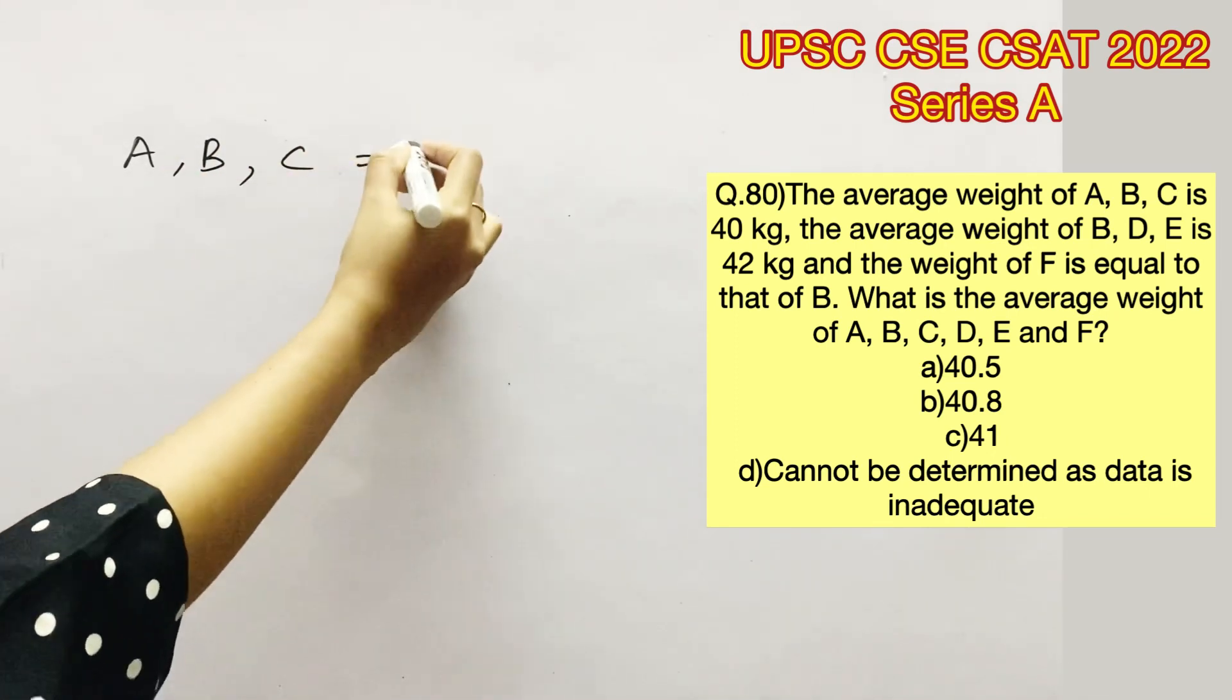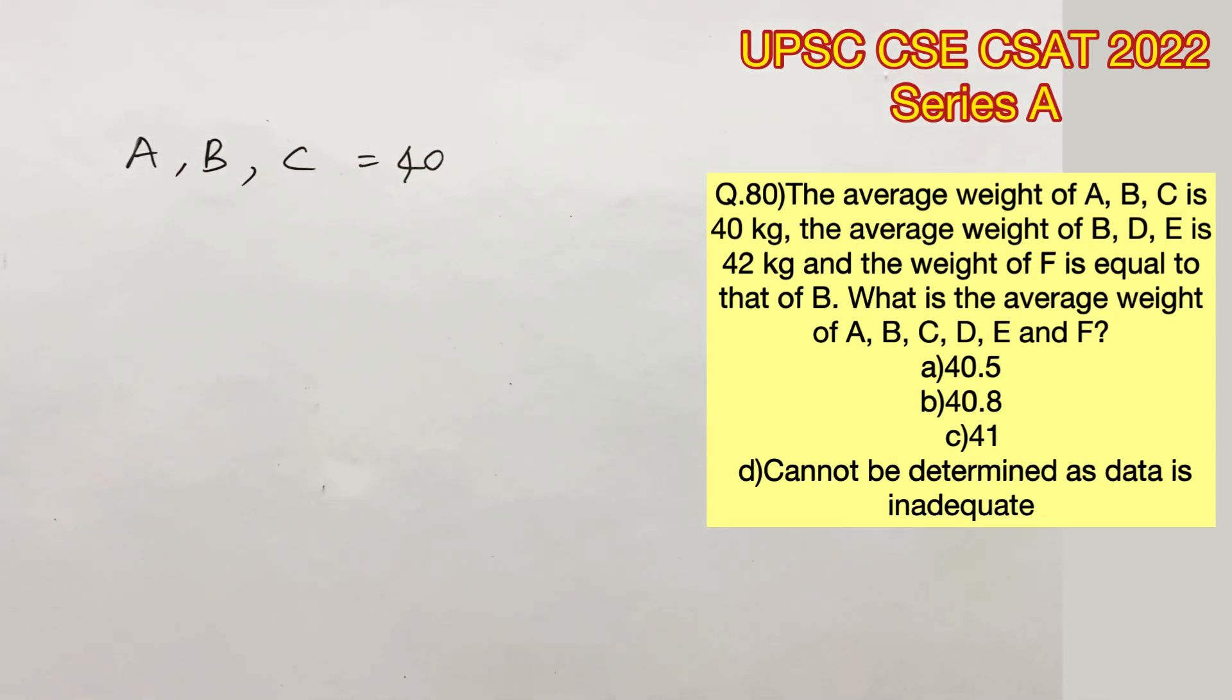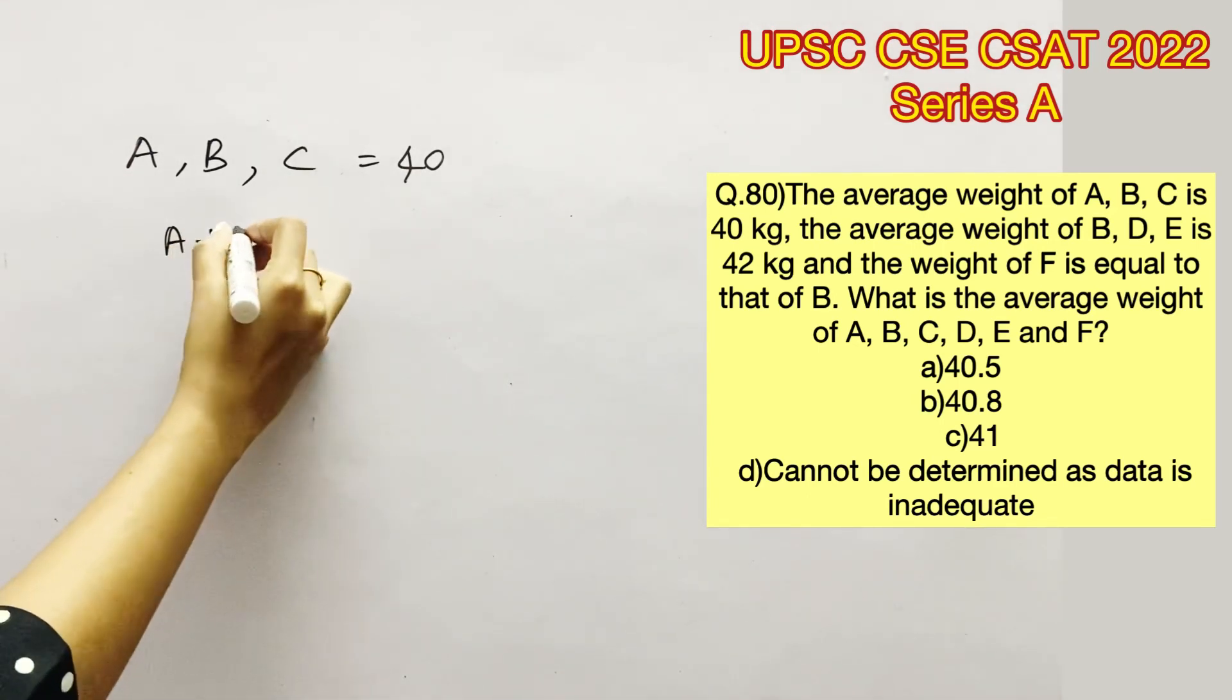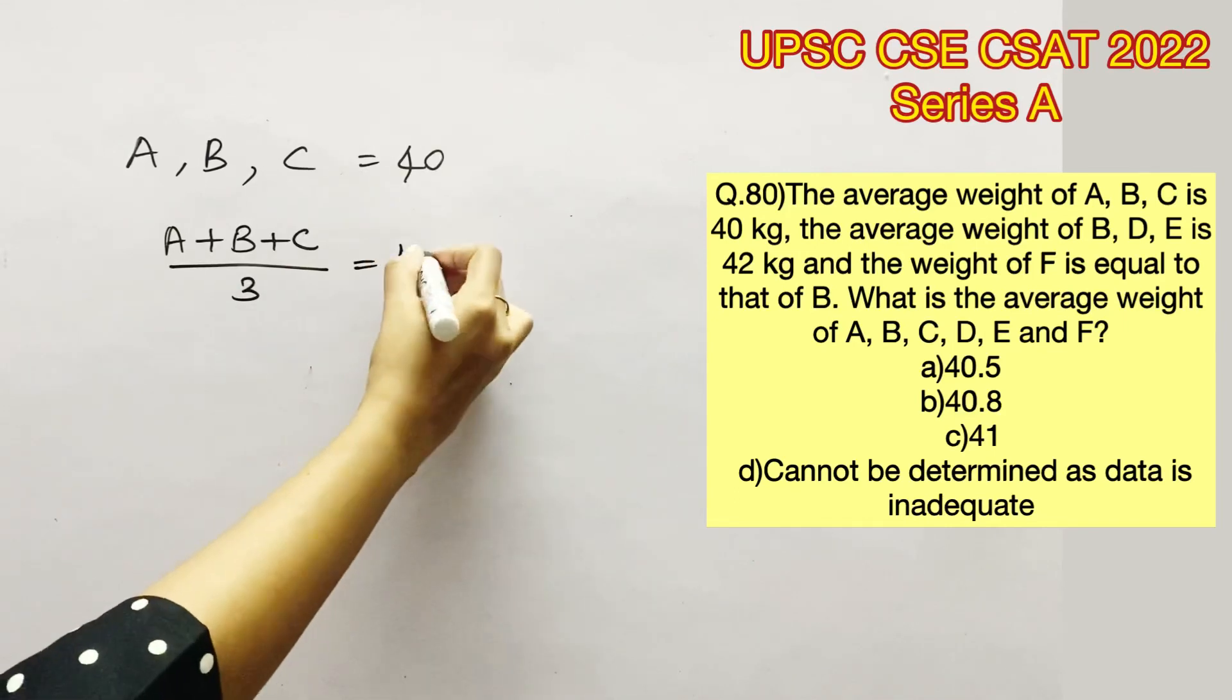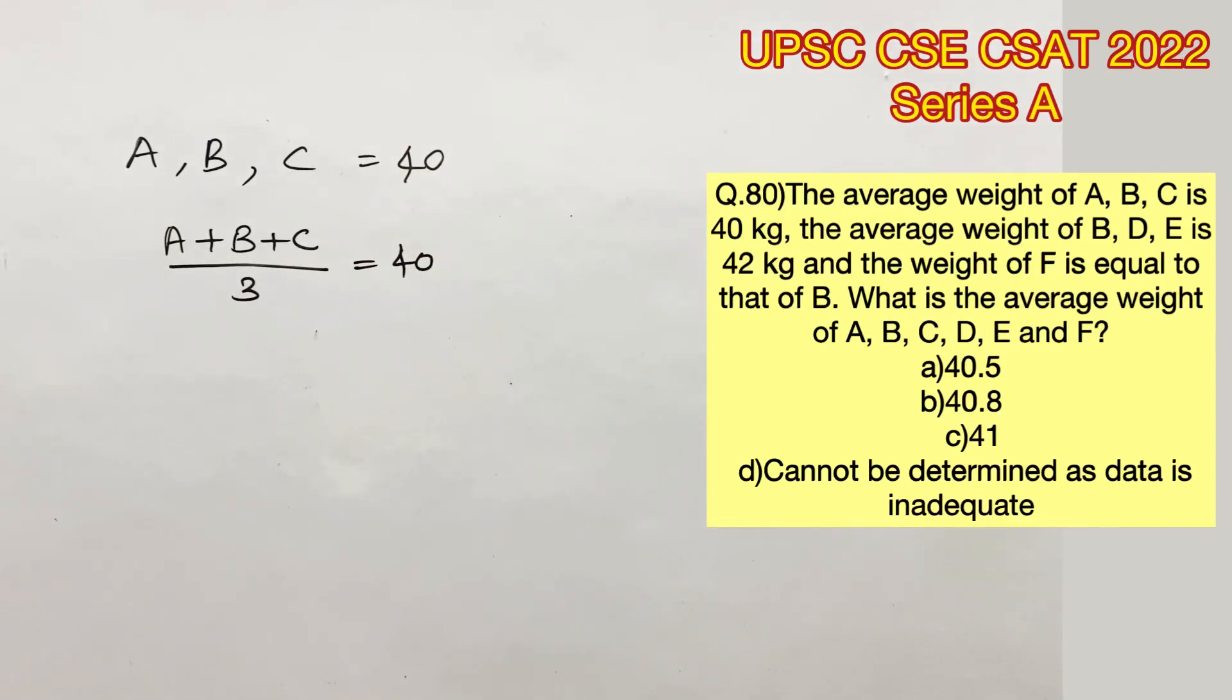It's given that the average weight of A, B and C is 40 kg. We know that the average is nothing but the sum of the given values divided by the number of values. So A plus B plus C divided by 3 is equal to 40. So A plus B plus C will give us 40 into 3, which is 120.